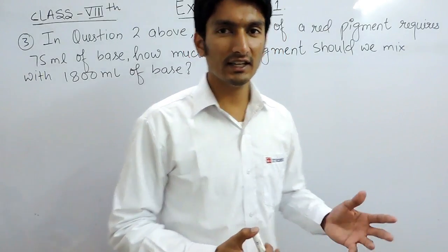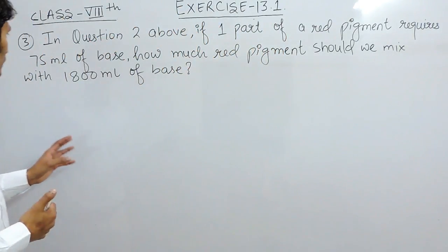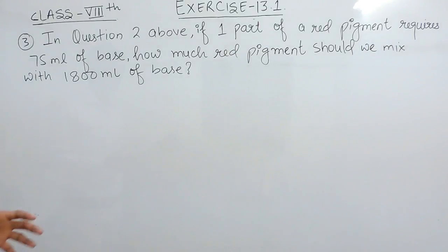Hello everyone, in this video we are going to solve question number 3 of exercise 13.1. In this question it is given that in question number 2, if one part of a red pigment requires 75ml of base, how much red pigment should we mix with 1800ml of base? Obviously this is regarding the second question, and we know that in the second question we were making a paint by mixing red pigment with base.